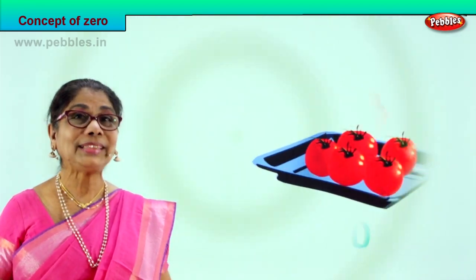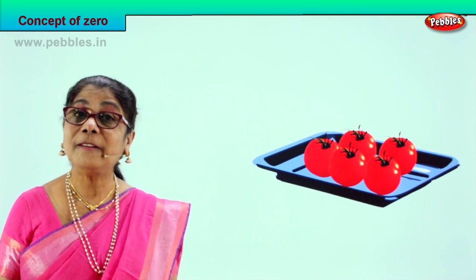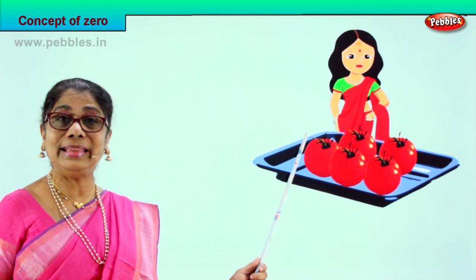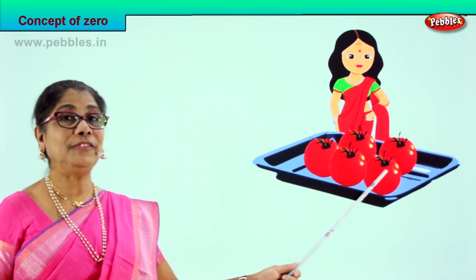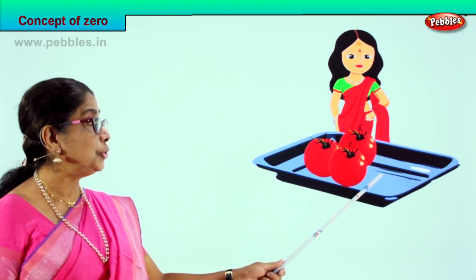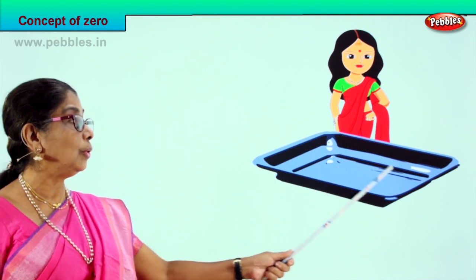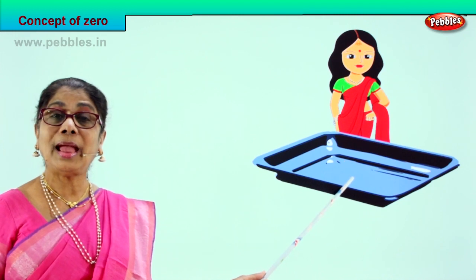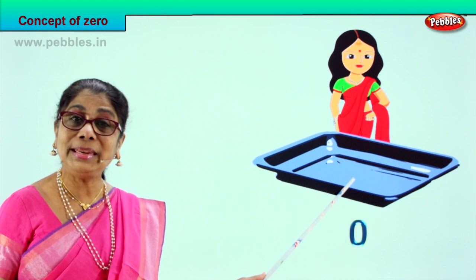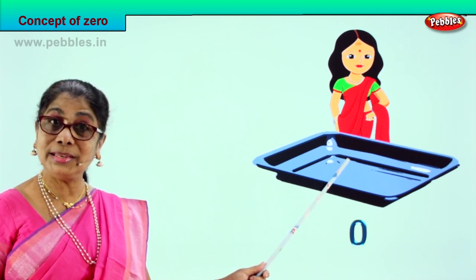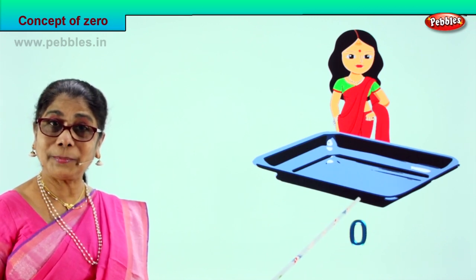Look what we have here. There is a tray full of tomatoes and mama is going to cook. Let's count them all: one, two, three, four, five. There are five juicy tomatoes and mama is ready to make nice tomato chutney. She will wash and cut away one by one — one is gone, two, three, four, and finally the last one too. All five tomatoes she's used for cooking. How many tomatoes left in the tray? Empty. Nothing in the tray, so we write zero.